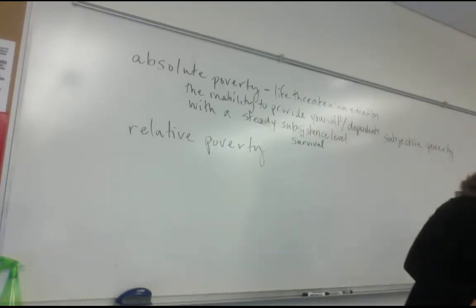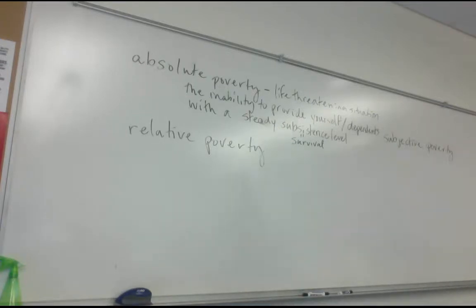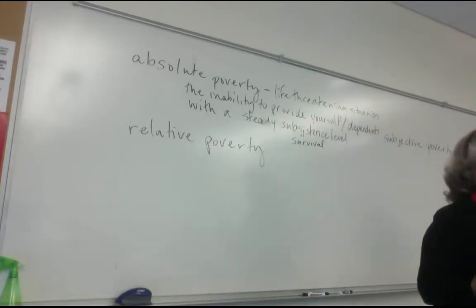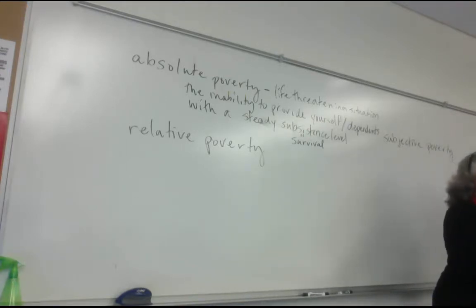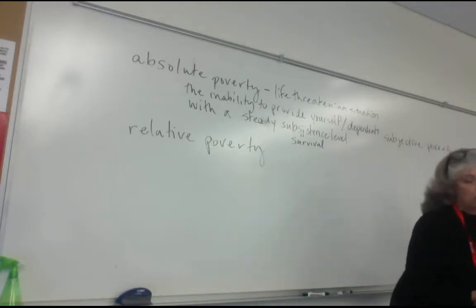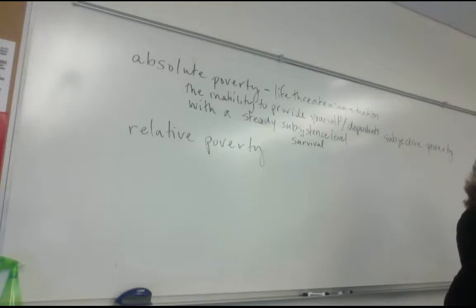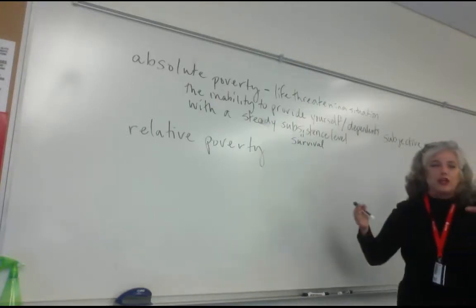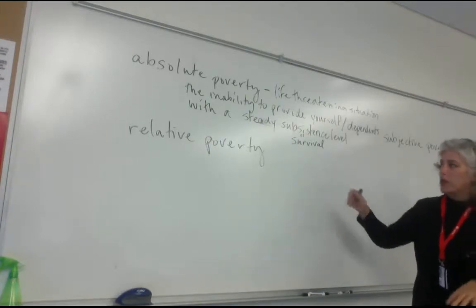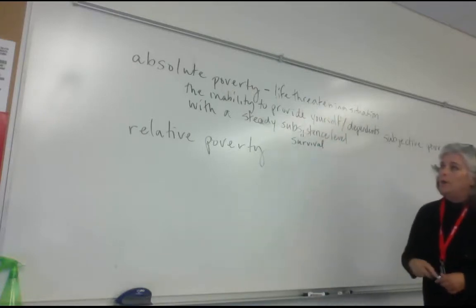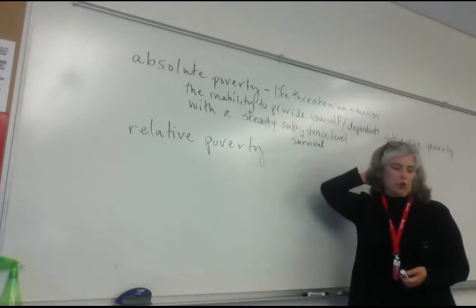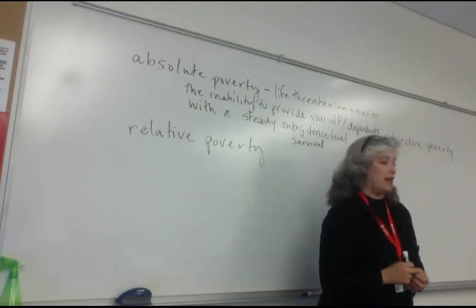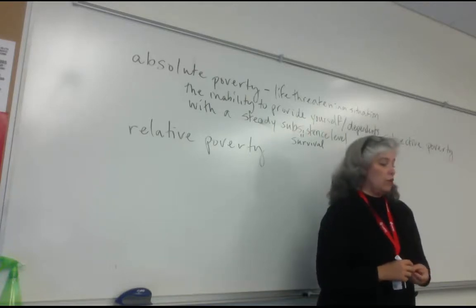It could happen anywhere — like the famine in Ethiopia, a terrible drought where people starved because the land dried up and nothing was growing. One of the most common causes of absolute poverty worldwide is lack of access to clean drinkable water — that's one of the most common reasons for early death globally, according to the CDC.